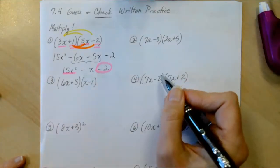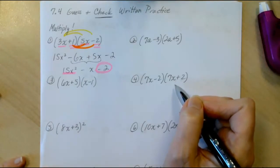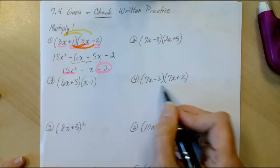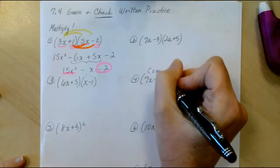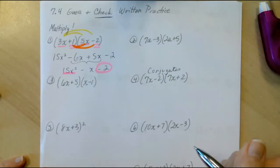So here's number 4. Number 4 is special if you think back to what we learned in the previous chapter. These two binomial expressions are called conjugates, and conjugates, when we multiply them together, something special happens.